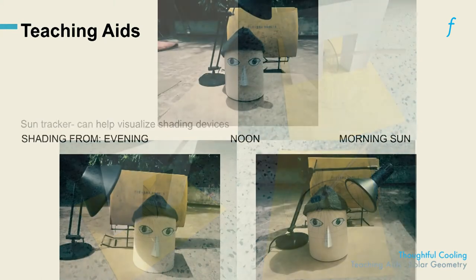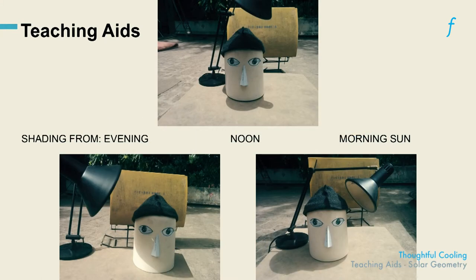These are just simple ways of indicating what it feels like when you have the morning sun, the evening sun, the noon sun, using a light bulb and lamp as a surrogate for the sun.